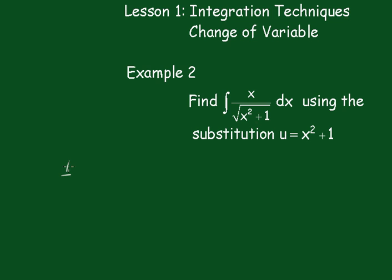Now I is equal to the integral of x over the square root of x² + 1 dx. u equals x² + 1,